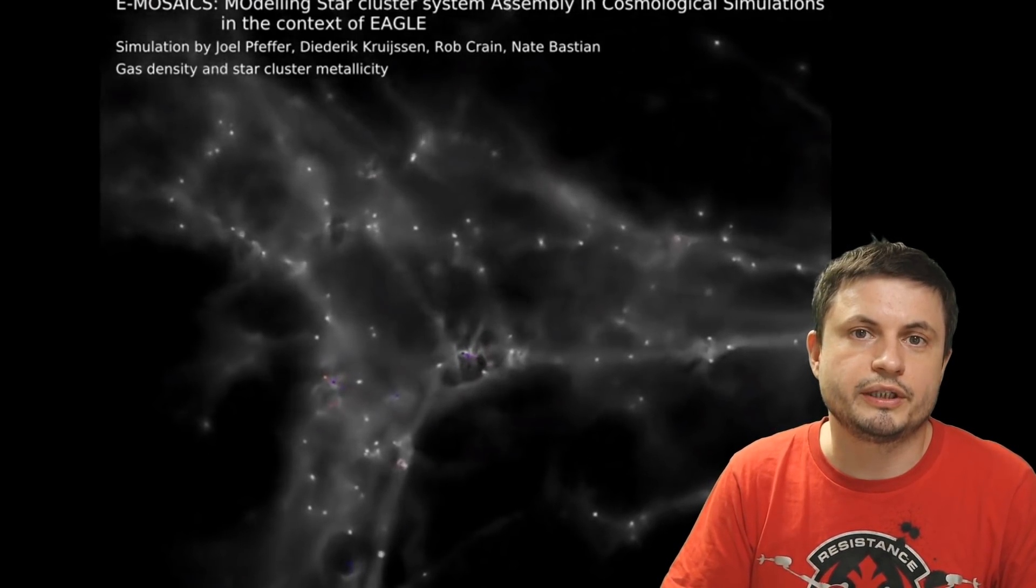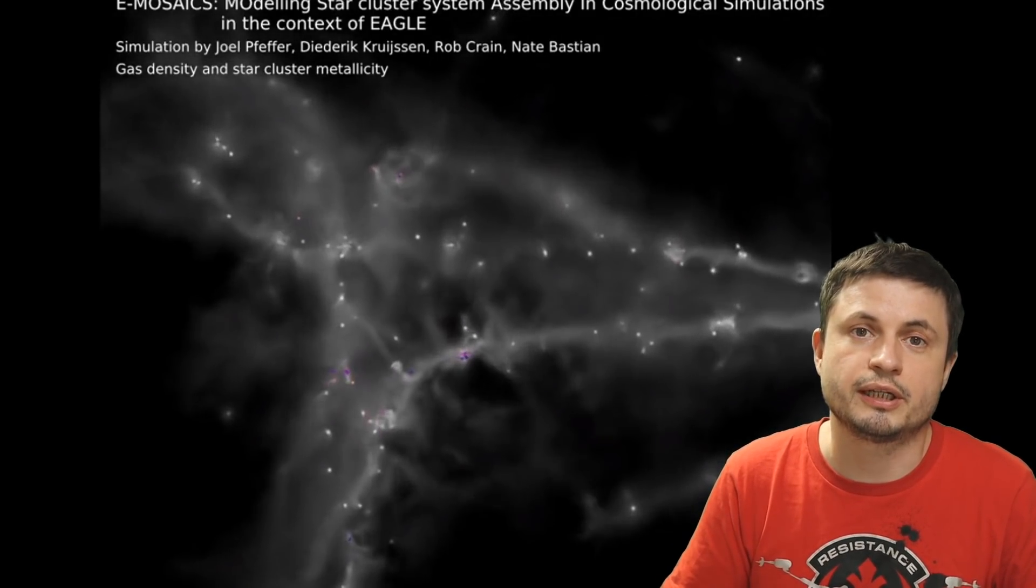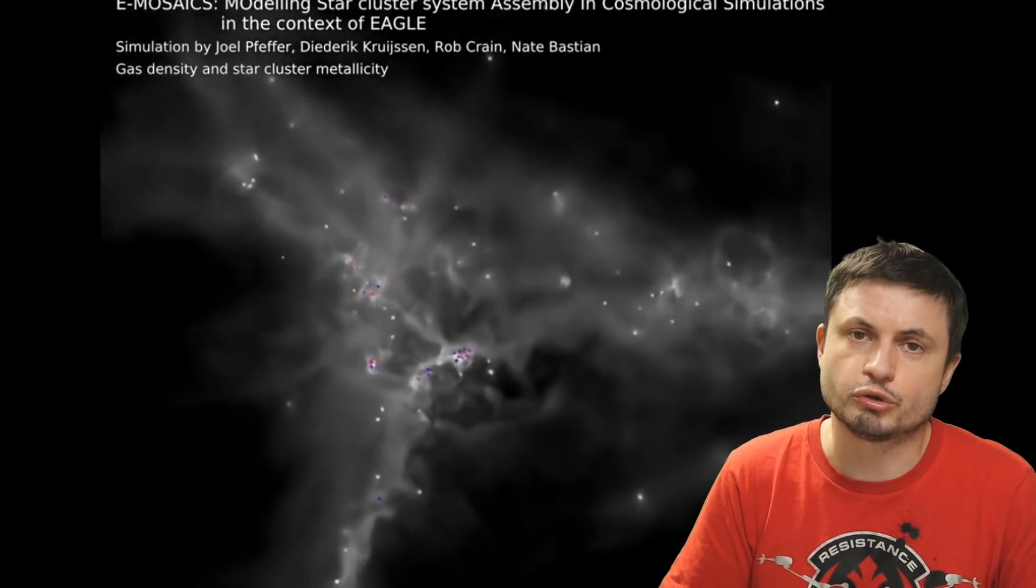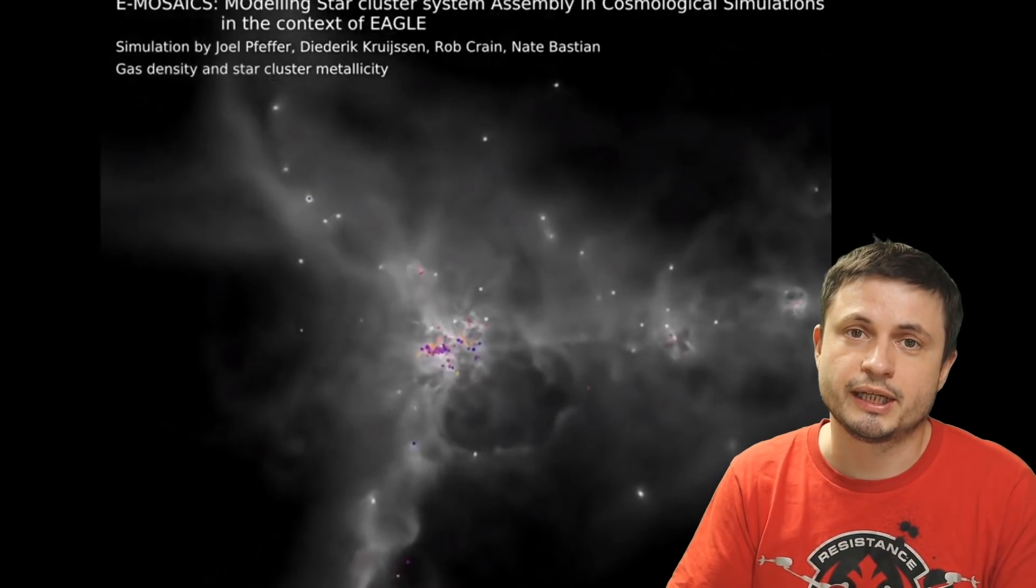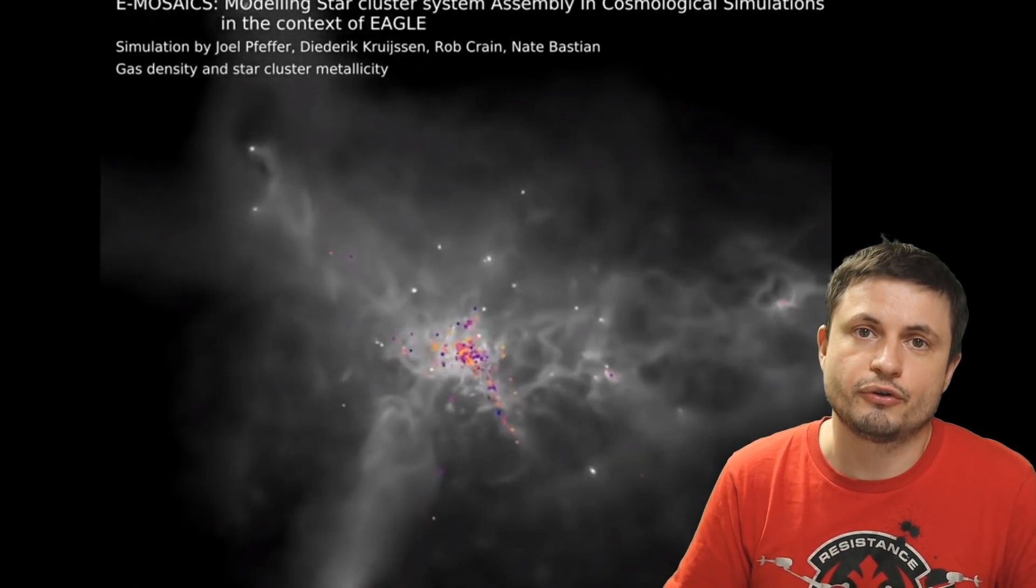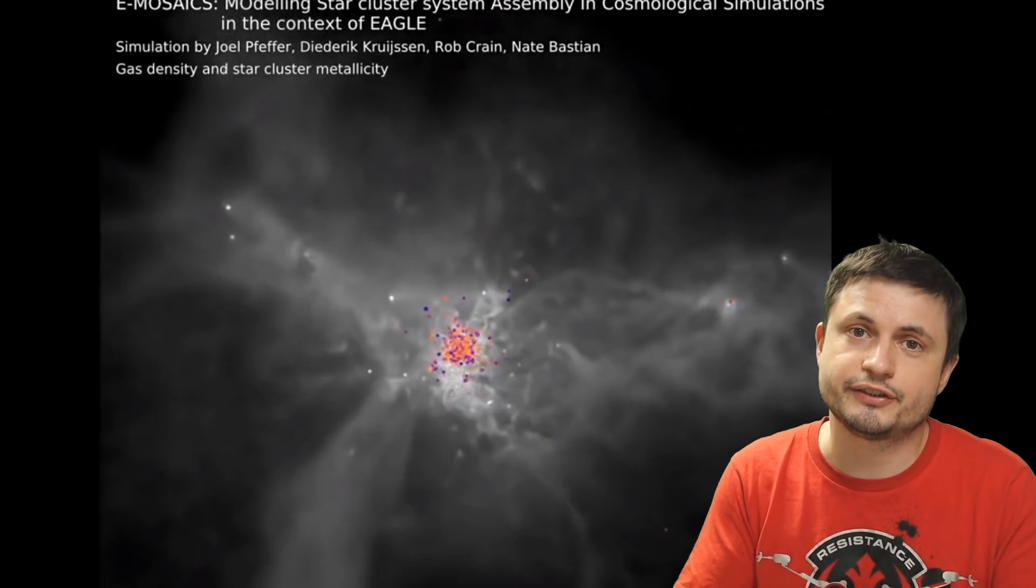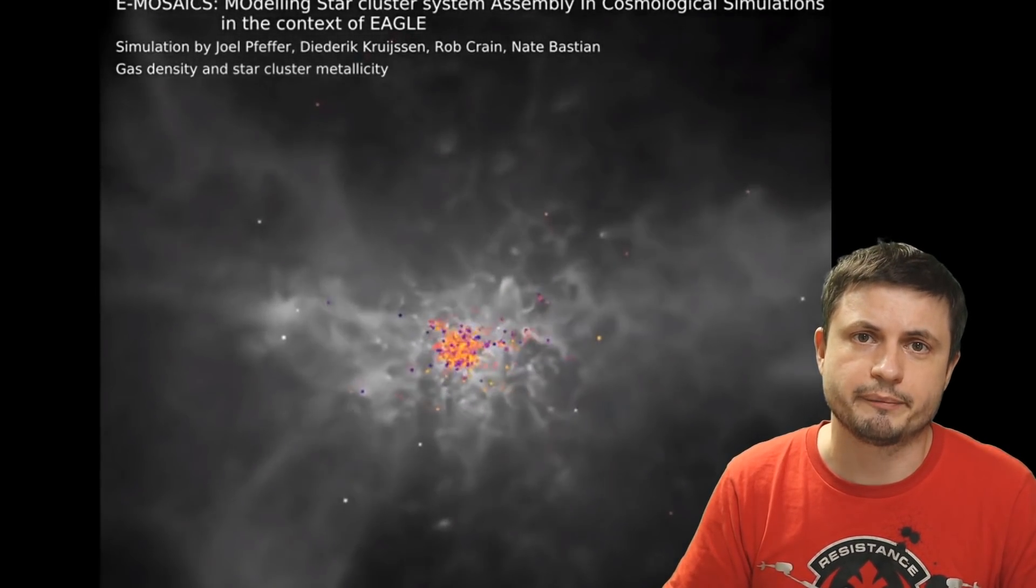Since we believe that when our galaxy was growing it was most likely built from within, essentially from the center, with the outskirts being added much later, which is what all of the simulations of galactic creation allowed us to see as well. Because normally when we run these simulations, that's pretty much what happens - first the galaxies form on the inside and then the external shell is added over time.